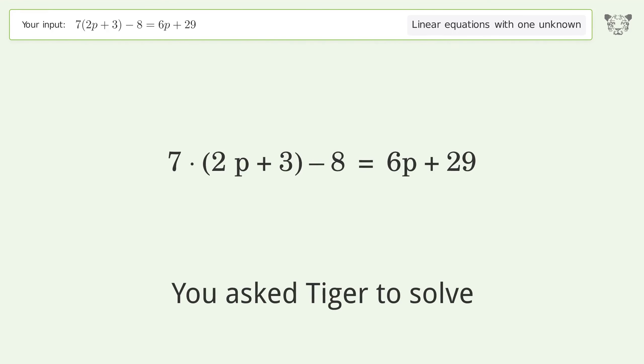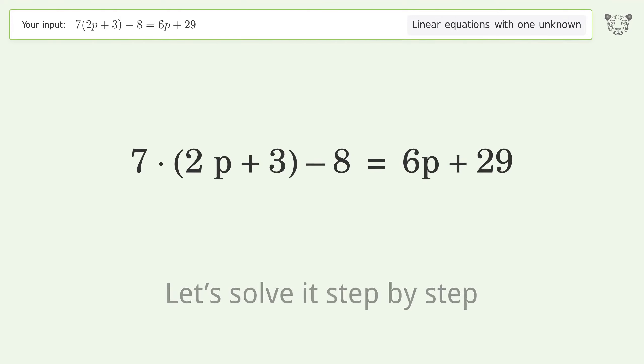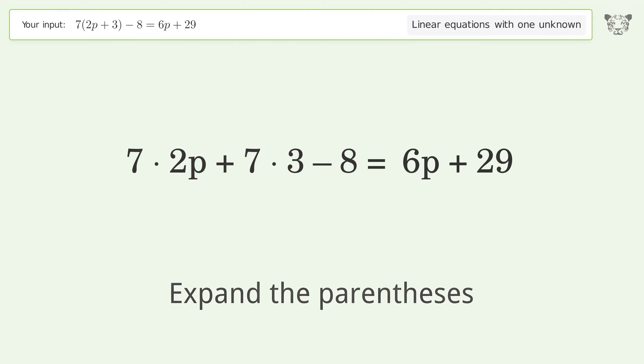You ask Tiger to solve this, which deals with linear equations with one unknown. The final result is p equals 2. Let's solve it step by step. Simplify the expression, expand the parentheses, multiply the coefficients, and simplify the arithmetic.